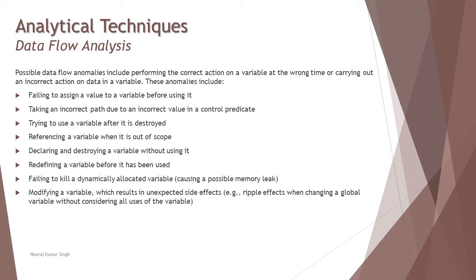For example: failing to assign a value to a variable before using it—you have not assigned but you're trying to use it, of course it will interrupt your execution. Taking an incorrect path due to incorrect value in a control predicate. Trying to use a variable after it is destroyed. Referencing a variable when it is out of scope—things which are called off and still you're trying to refer that after a piece of code. You must take care of that and do not do such mistakes in order to avoid a large number of defects. Declaring and destroying a variable without using it—that means this was not at all required, so why did you declare it at all? Redefining a variable before it has been used and failing to kill a dynamically allocated variable, causing a lot of memory leak. That's the main concern which we were just talking about. More or less, modifying a variable which results in unexpected side effects. Sometimes it might be critical that you create something which has a lot of side effect and conflict with other parameters and values of the program.